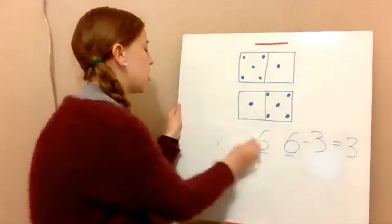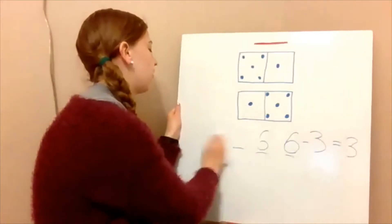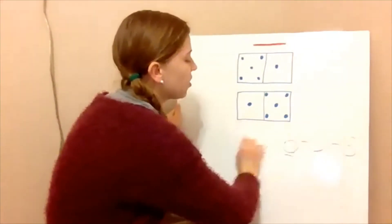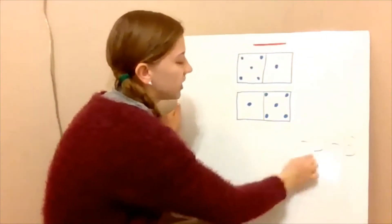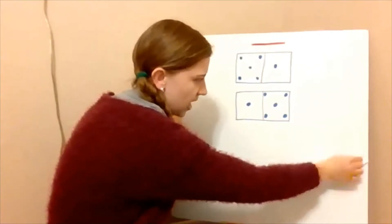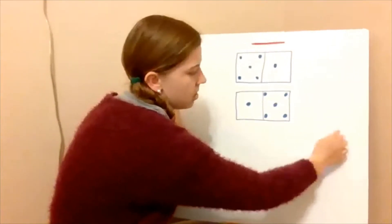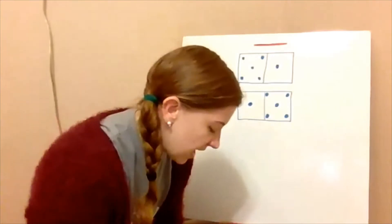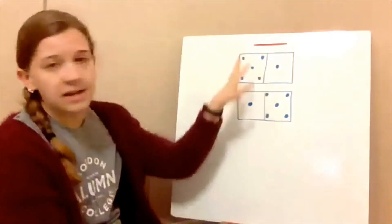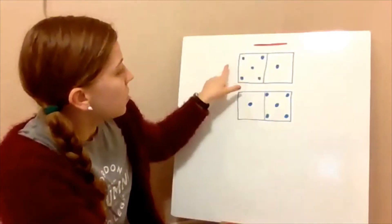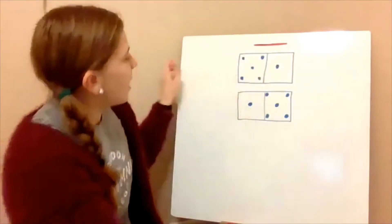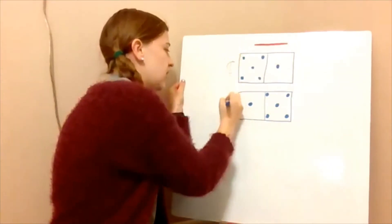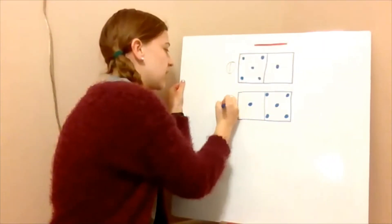So now let's talk a little bit about fact families. Now that we've reviewed related addition and subtraction facts, let's take a look at these dominoes. Let's take a look at domino number one first — I'll label them.